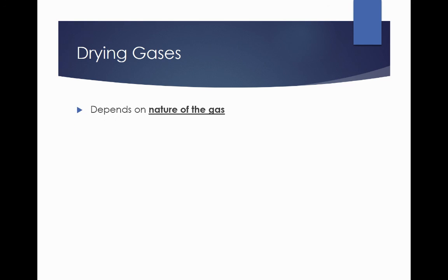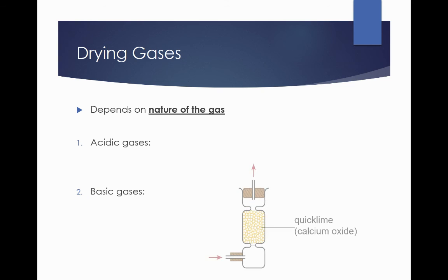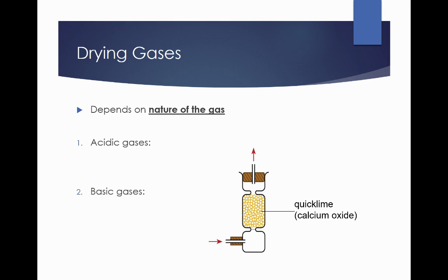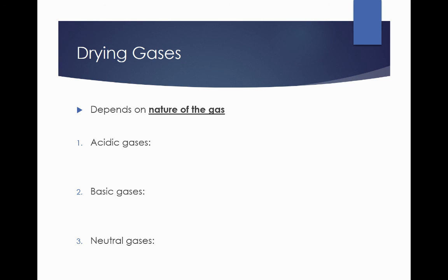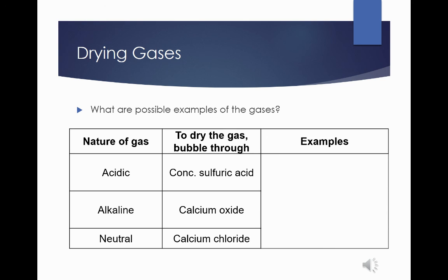To dry gases, it depends on the nature of the gas. For acidic gases, we pass the gas through concentrated sulfuric acid. For basic gases, we pass it through calcium oxide. And for neutral gases, there is usually no particular kind. We can use any method. This is the summary. And think about various examples of gases that can be used in these cases here.